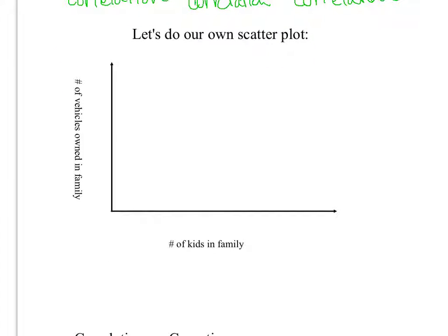So the idea is on this next one that we would do a correlation together as a group. Obviously we can't do that because we're on video. But if you think about it, the number of kids in the family, so we'd go around and I'd say how many kids do you have in your family? So let's say you have three. And then I would say how many number of vehicles your family owns. Let's say your family owns two. We would put that point right there.